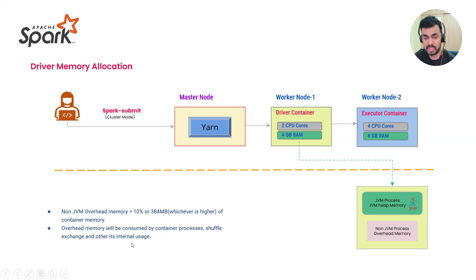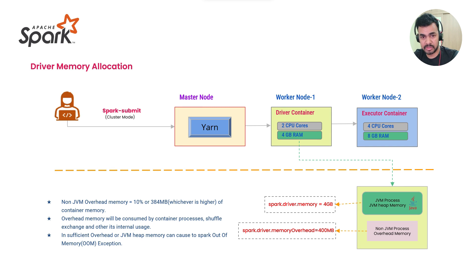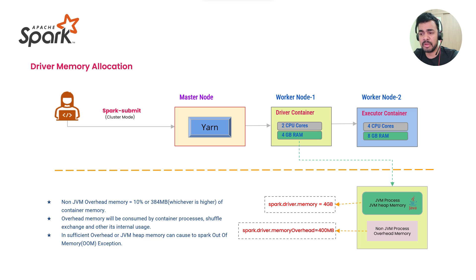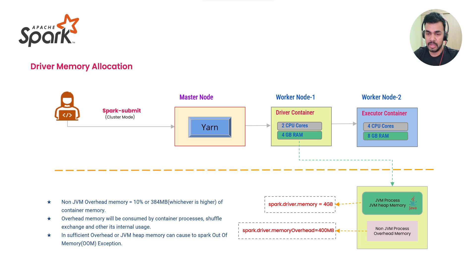Overhead memory is consumed by container processes, shuffle exchange, and other internal usages. This is a configuration we generally pass when submitting our Spark application: spark.driver.memory and spark.driver.memoryOverhead set to 400MB. If you understand this, you can also understand executor memory allocation.